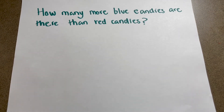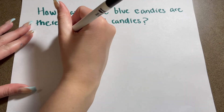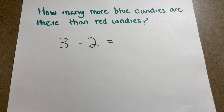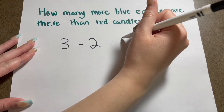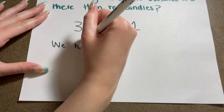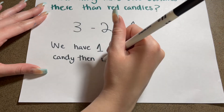The next question: how many more blue candies are there than red candies? First, how many blue candies are there? Three. And how many red candies? Two. So we do a little subtraction: three blue minus two red equals one. So we have one more blue candy than red candy. Let's write that: we have one more blue candy than red candy.